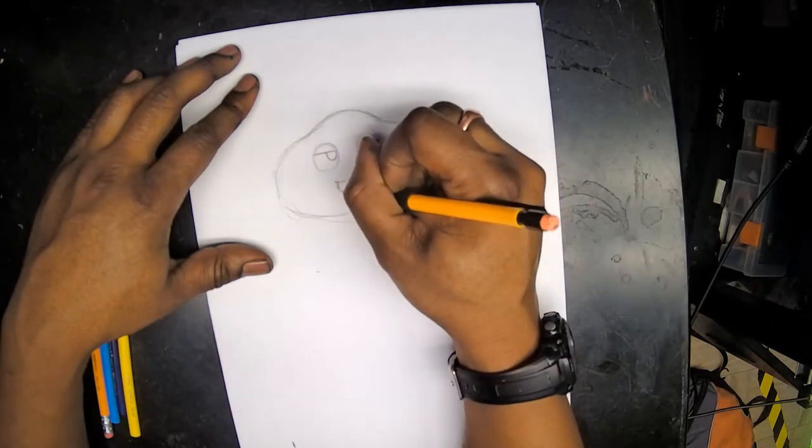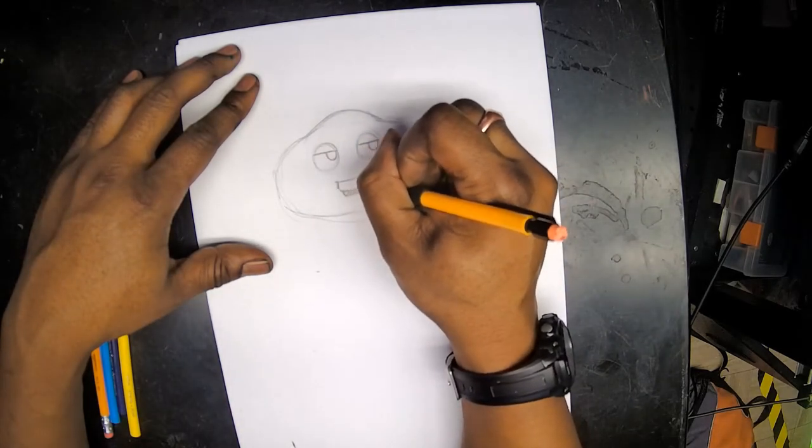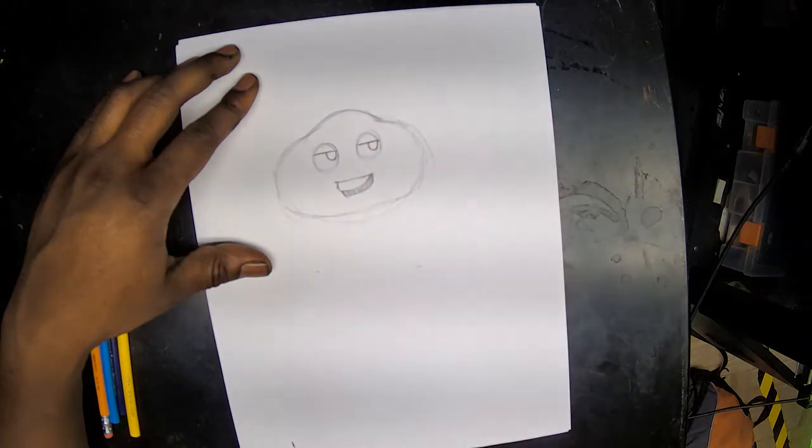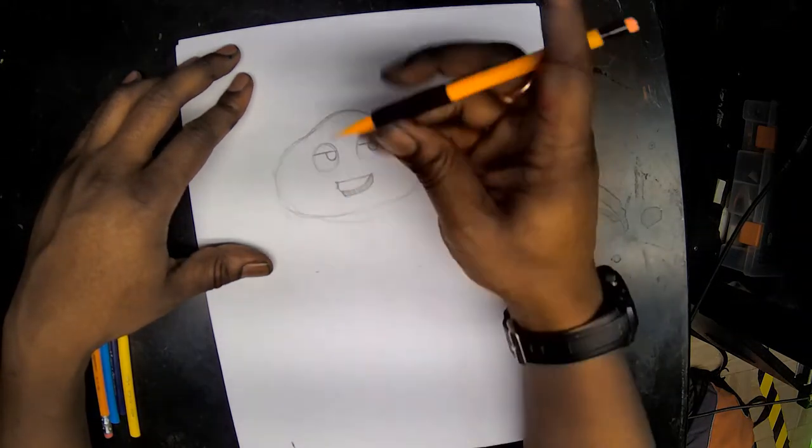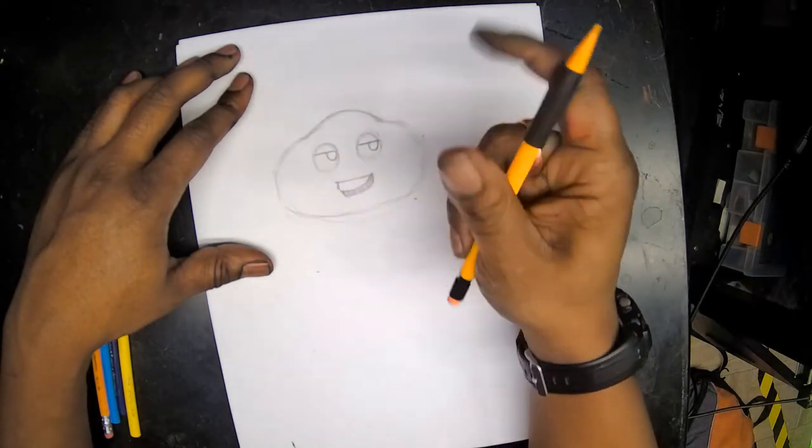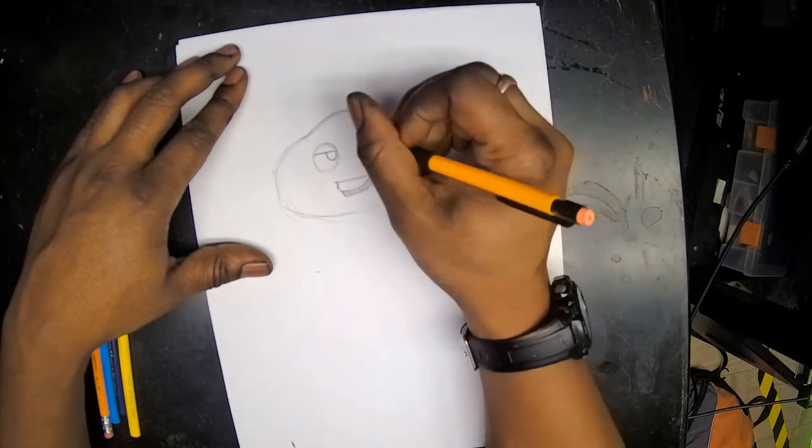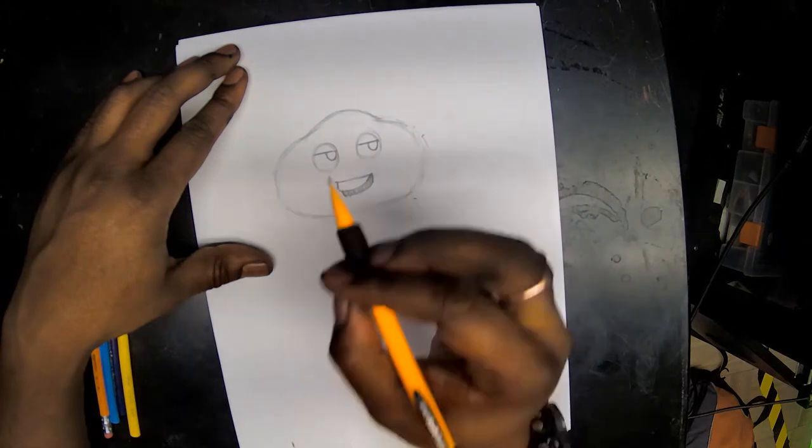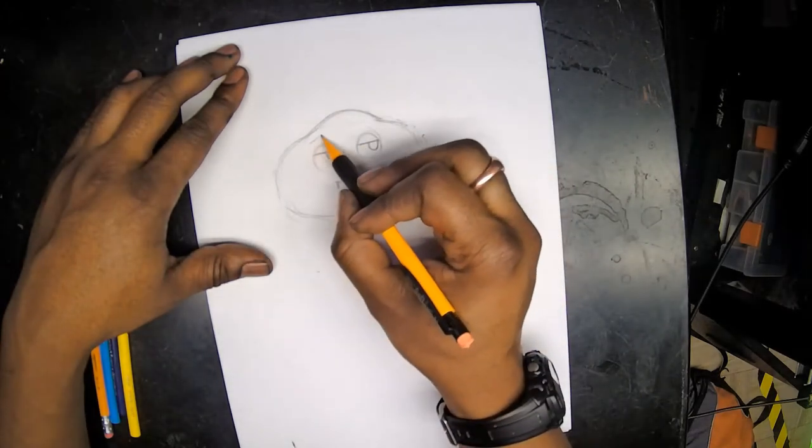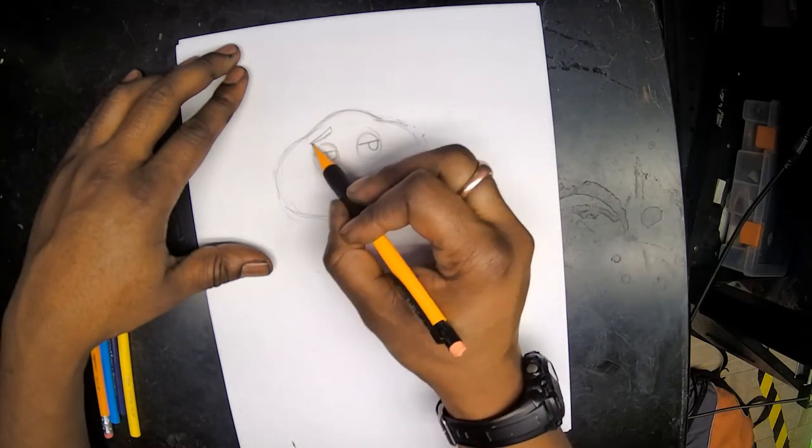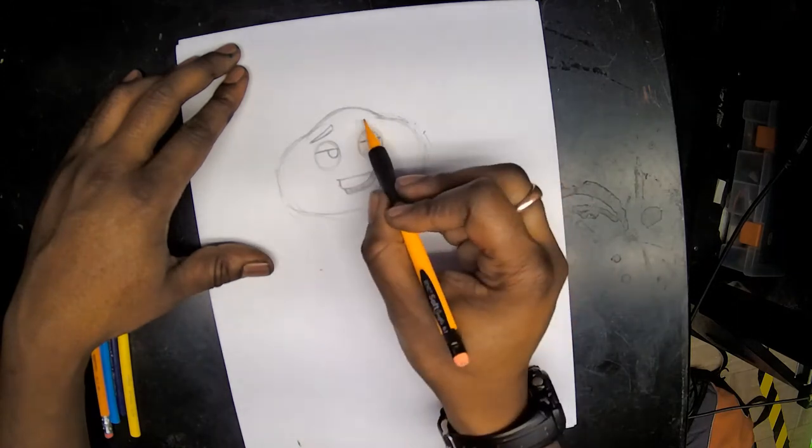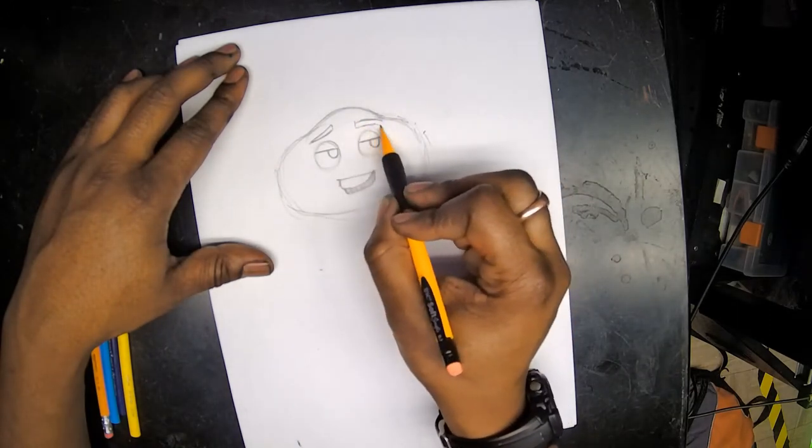If it helps you, you can shade it in so you can tell that it's not another row of teeth and it's kind of different. The last two things we're going to do with the face area is add those eyebrows. I'm going to curve one going one way and curve the other going the other way.